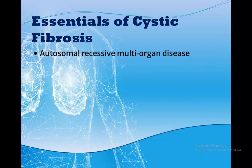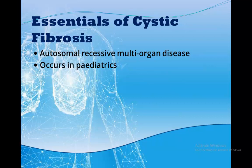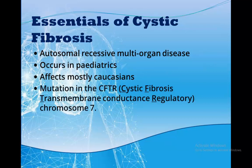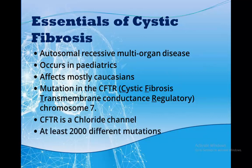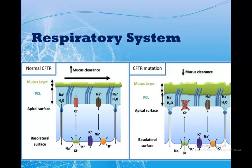Cystic fibrosis is a genetic disease — an autosomal recessive disease — meaning both parents must be carriers for it to present in some of the children. It affects multiple organs including the respiratory and GI systems. It is a disease of paediatrics, but since patients are tested right after birth, they are diagnosed early. They have a life expectancy of around 41 years due to the progressive nature of the disease. It mostly affects Caucasians, though other races can also be affected. These patients have a genetic mutation in the CFTR gene — cystic fibrosis transmembrane conductance regulator — which is a chloride channel. The most common mutation in Caucasians is the ΔF508 mutation.